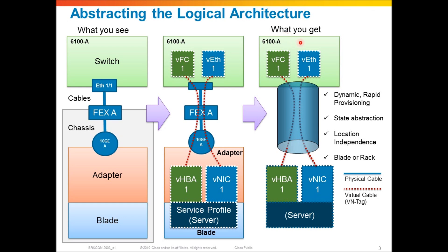What you really get at the end of the day is this logical architecture on the right side. The fabric extenders, the physical ports on the adapters, the physical adapter itself, the physical switch port on UCS Manager — all of that really looks like a conduit carrying virtual cables from the virtual HBAs or NICs up to their virtual switch ports on the Fabric Interconnect. This is important because it provides dynamic and rapid provisioning. We don't have to connect physical cables to stand up a service anymore. The physical cable is connected at the very first implementation, and all subsequent standing up of servers is done through this virtualization, automatically through dynamic provisioning at UCS Manager.